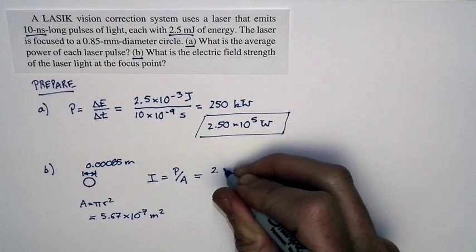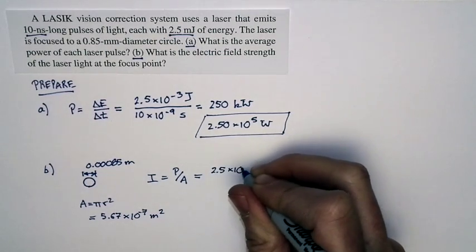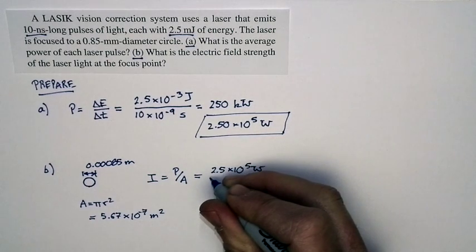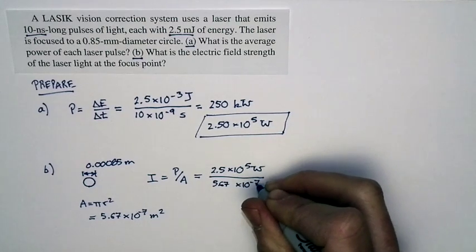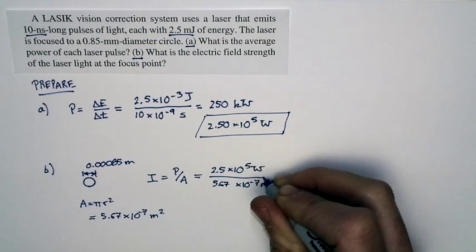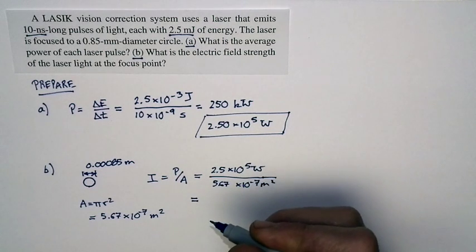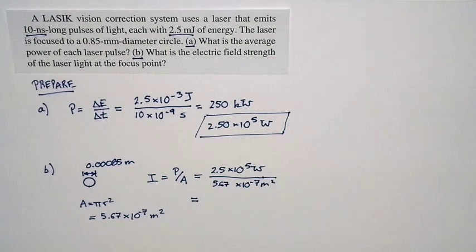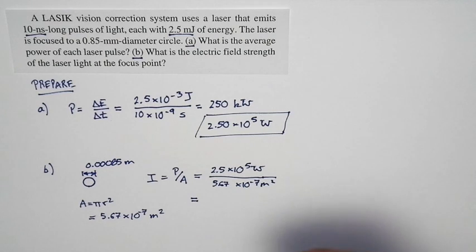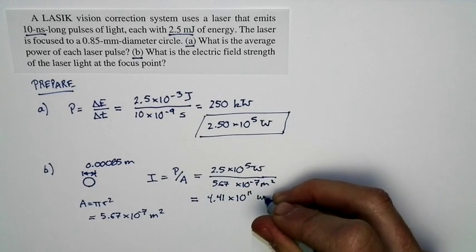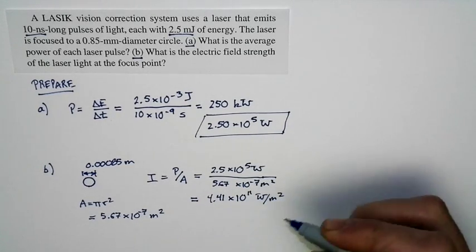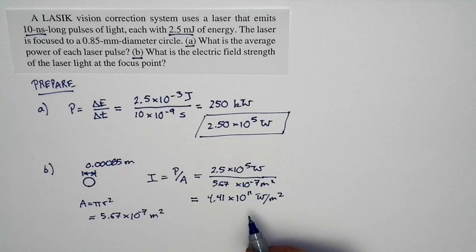So the power is 2.5 times 10 to the fifth watts divided by the area, which is 5.67 times 10 to the minus 7th square meters. And so the intensity is quite large indeed. We get an intensity of 4.41 times 10 to the 11th watts per square meter. By the way, I'm keeping an extra significant figure at this intermediate stage to avoid rounding errors. So we get a huge intensity.